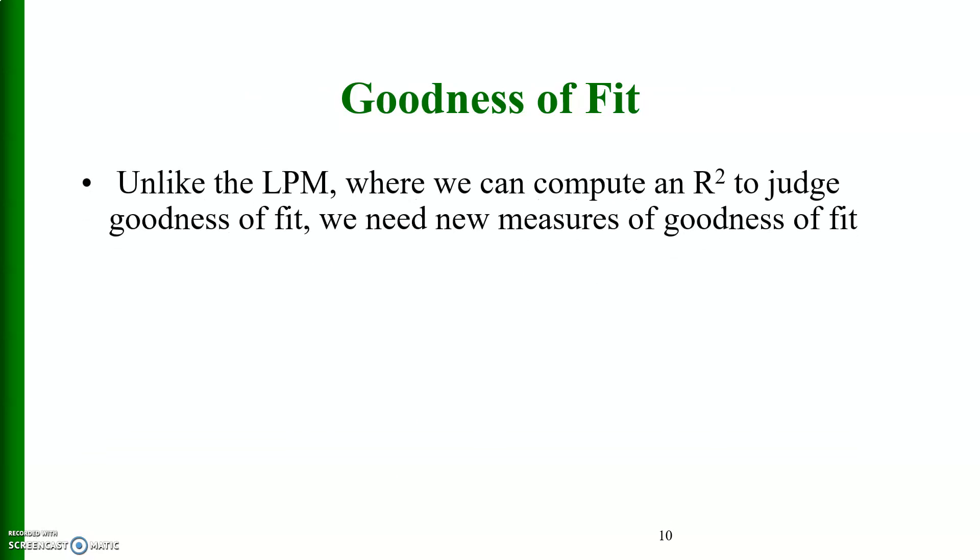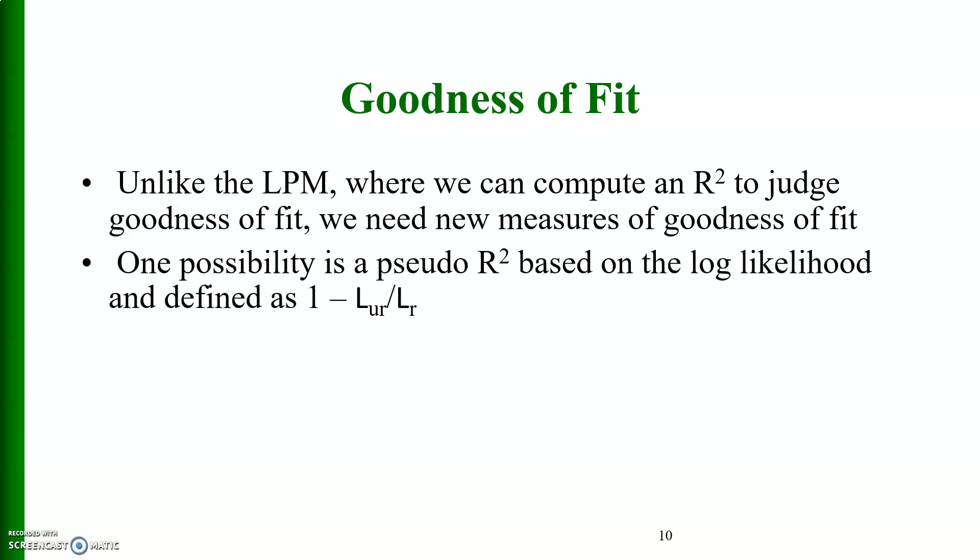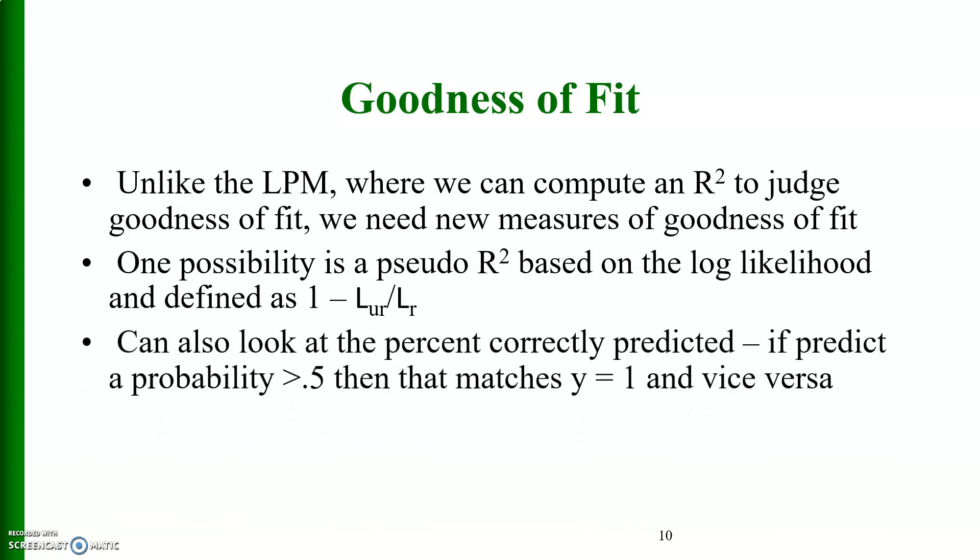Goodness of fit. Unlike the linear probability model where we can compute an R square to judge goodness of fit, we need new measures of goodness of fit. One possibility is a pseudo R square based on the log likelihood and defined as 1 minus log likelihood of the unrestricted model divided by log likelihood of the restricted equation. We can also look at the percent correctly predicted. If predicted probability is greater than 0.5, then that matches y is equal to 1 and y is worse.